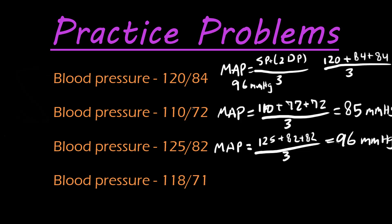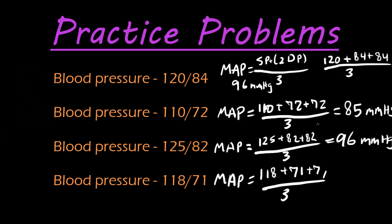And for our last practice problem here: 118 plus 71 plus 71, divided by three, and we get 86.66, so that is going to be 87 millimeters of mercury. Hope this helps.